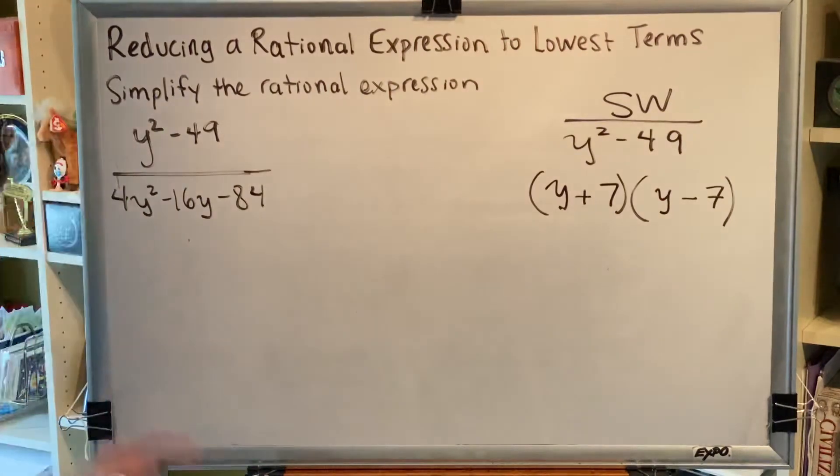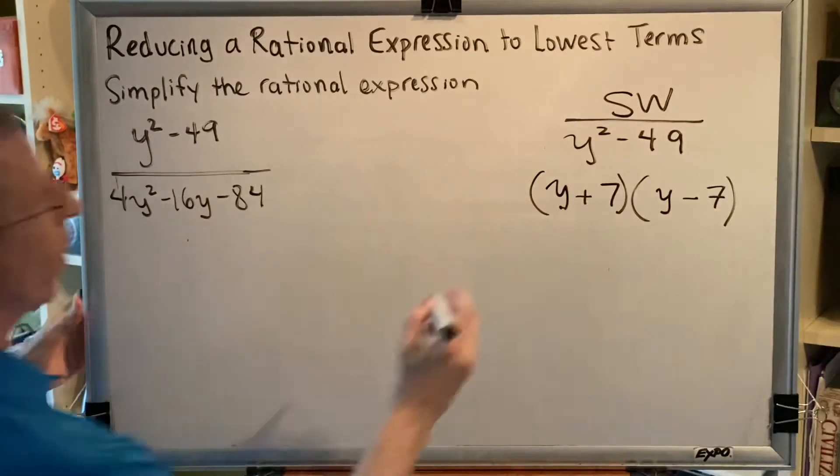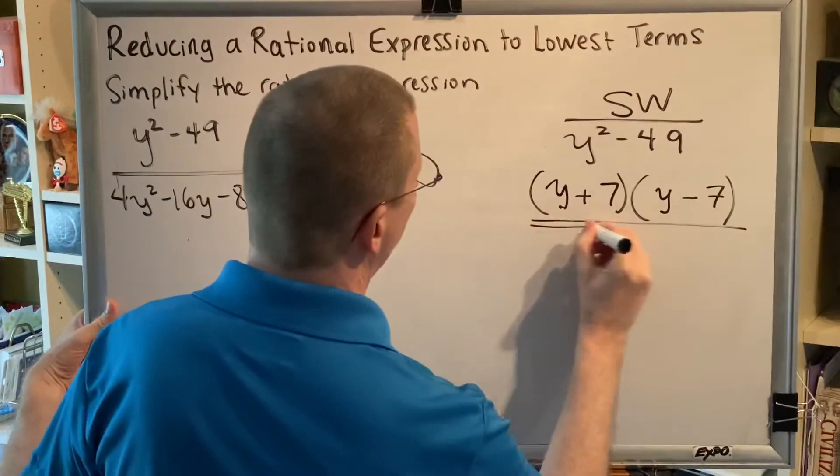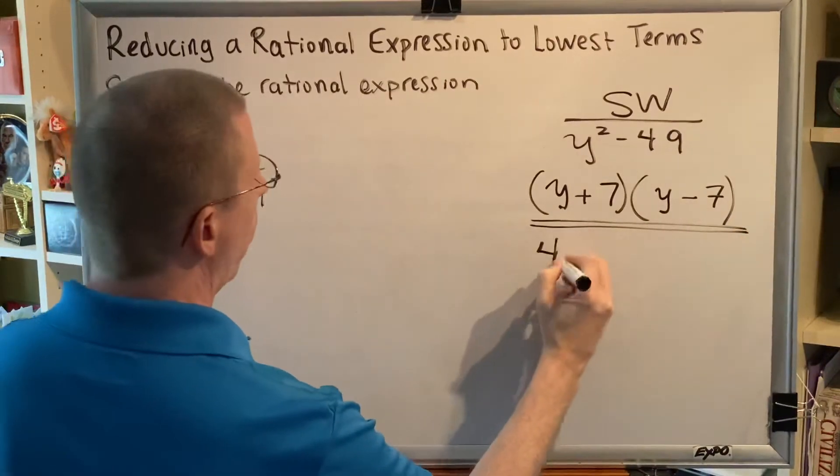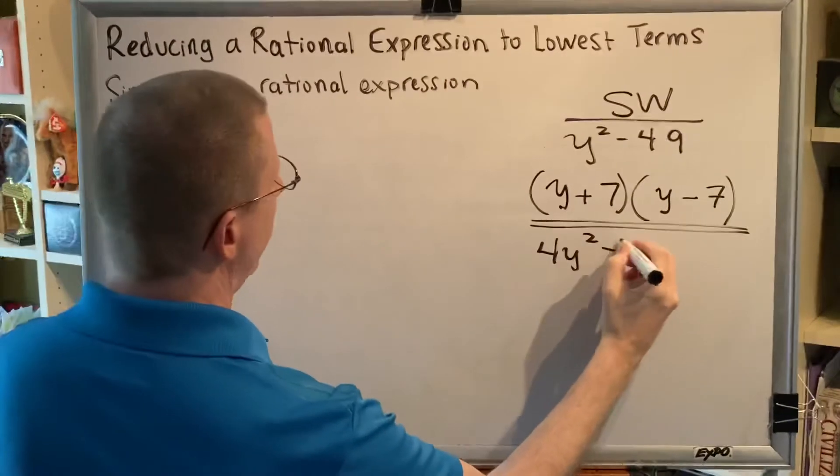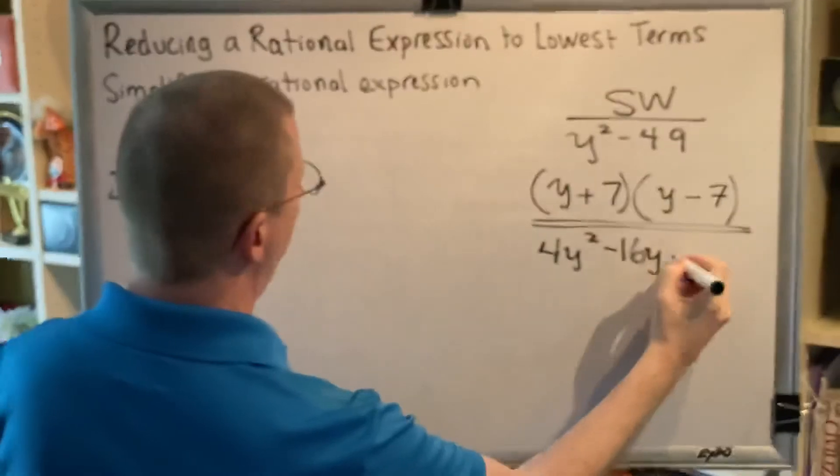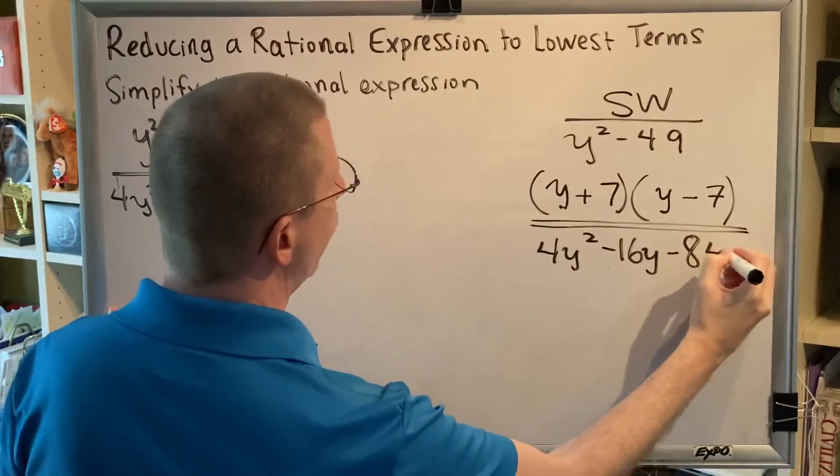So now we've done our numerator. We're going to move on to our denominator now. Denominator: 4y squared minus 16y minus 84.